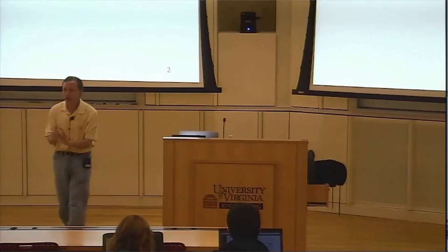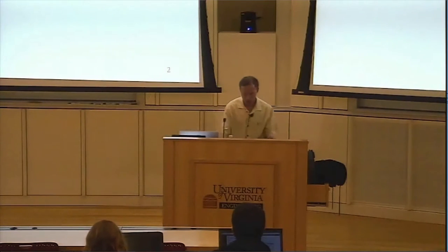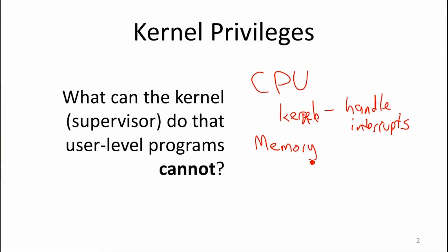What special power does the kernel need in order to decide what the user-level program's memory space is? At a high level, it needs to be able to see all the memory and set up things in the processor that limit what memory the user program can see. That's the big thing the kernel has — access to control over memory in ways that regular programs do not.